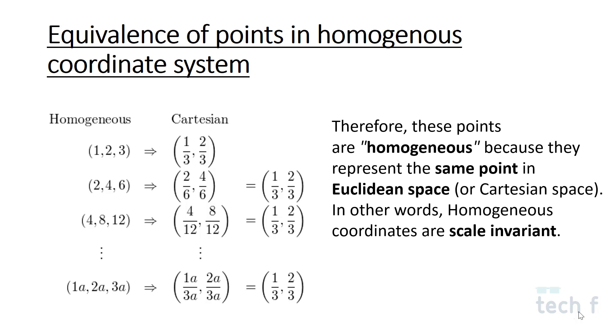Homogeneous coordinates are scale invariant because the same points such as (1, 2, 3) and (2, 4, 6) are different points in homogeneous coordinate system but they represent the same point in Euclidean space.